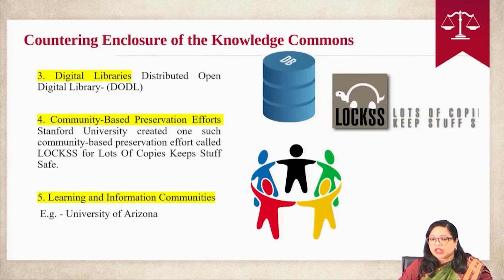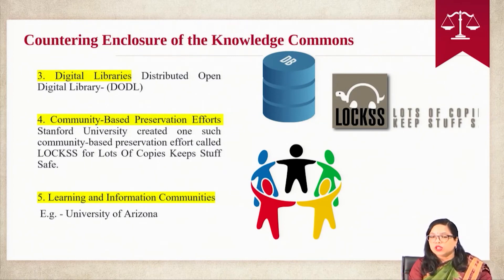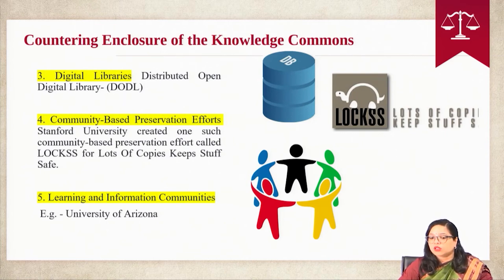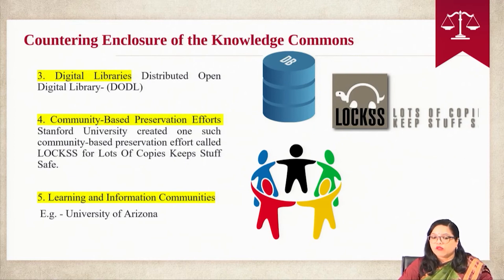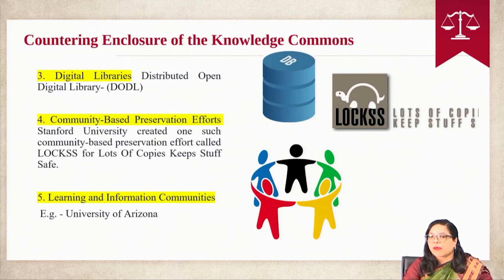Digital libraries include the distributed open digital libraries which were initiated by research libraries to provide universal online access to public domain humanities and social science collections from different research institutions that could be used by scholars, teachers, students and the public. Community-based preservation efforts: Stanford University created one such effort called LOCKSS — Lots of Copies Keep Stuff Safe — based on libraries and their collective action comprising 80 of them, and functioning with more than 50 publishers. These efforts copy and store journal content with the help of common infrastructure for systematic capturing of files.